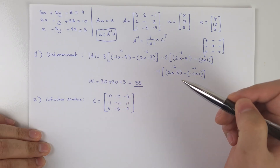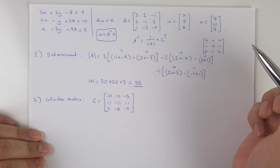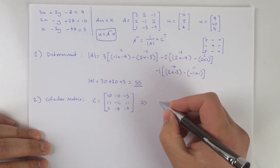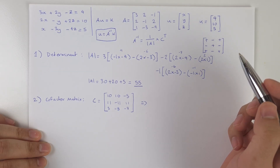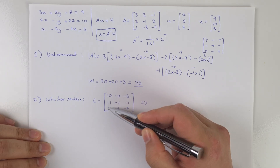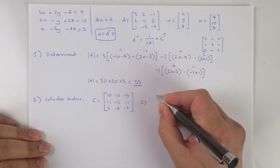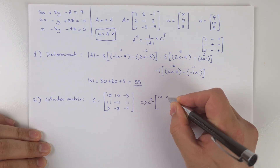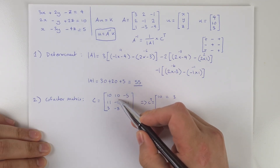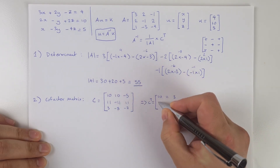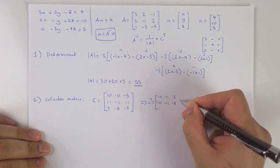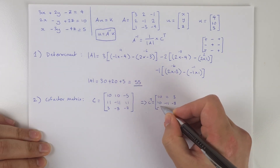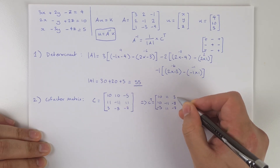I've gone ahead and filled out the complete cofactor matrix. Now we simply transpose it — changing columns into rows and vice versa. The first column becomes the first row: 10, 11, 3. The second column becomes the second row: 10, minus 11, minus 8. And the last column becomes the last row: minus 5, 11, minus 7. So our transposed cofactor matrix CT is now complete.